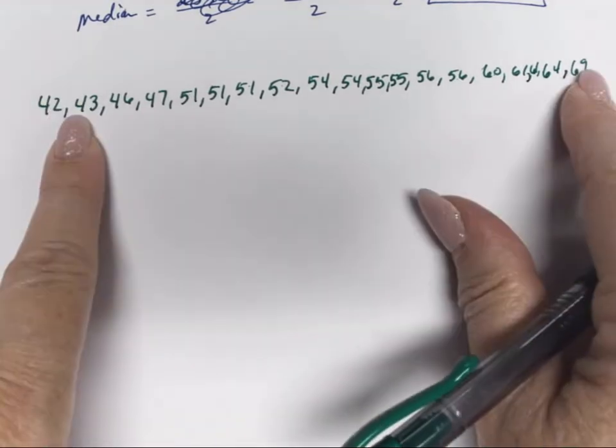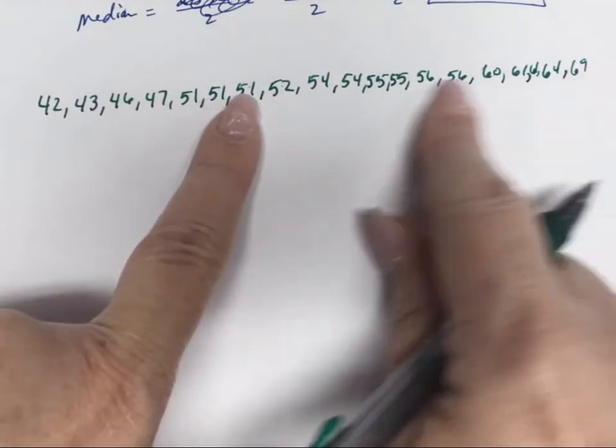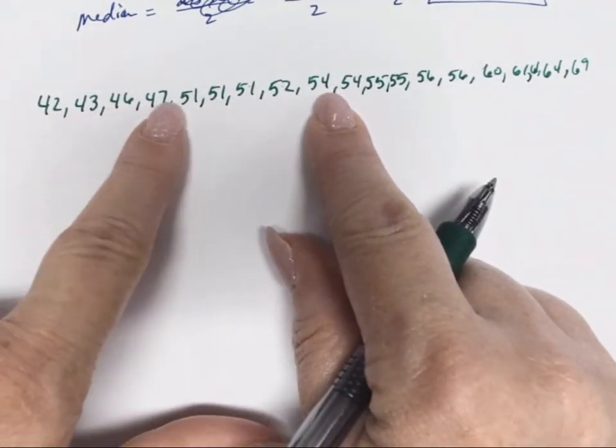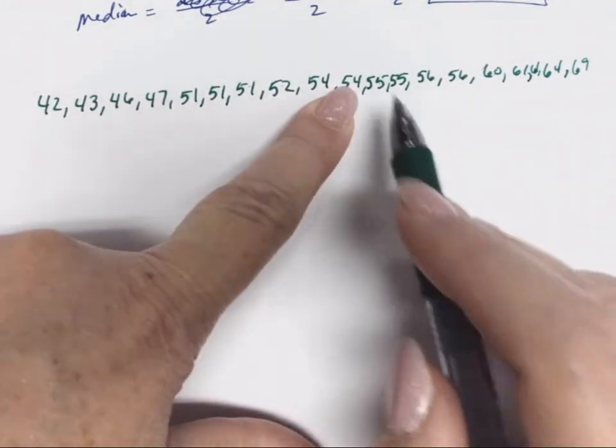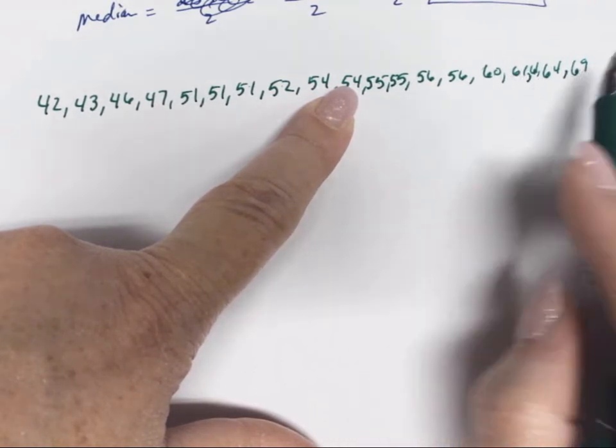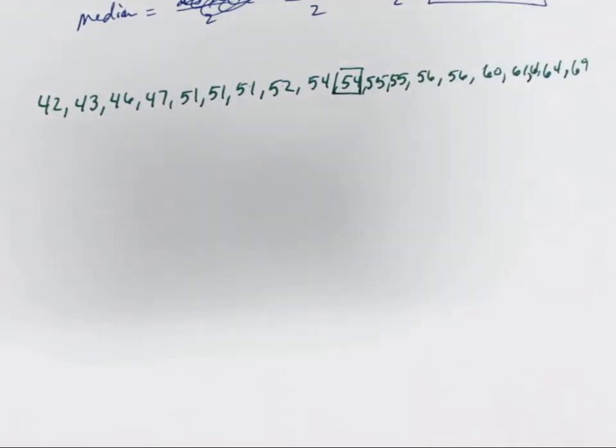If we're looking for the median, if we look that there are 19, then there's going to be 9 on each side of the middle one, and the middle will be the 10th one. So 54 will be our median.